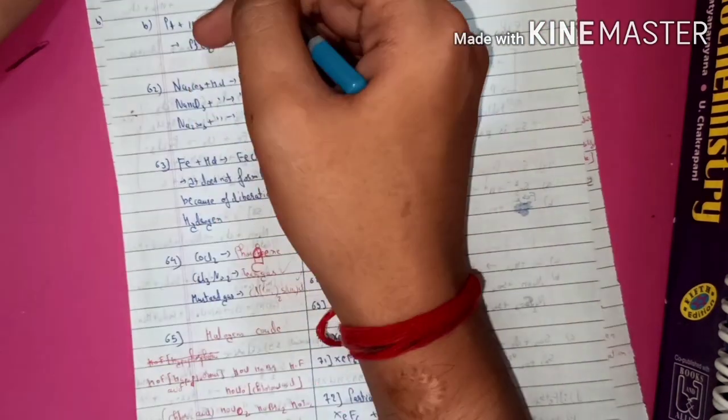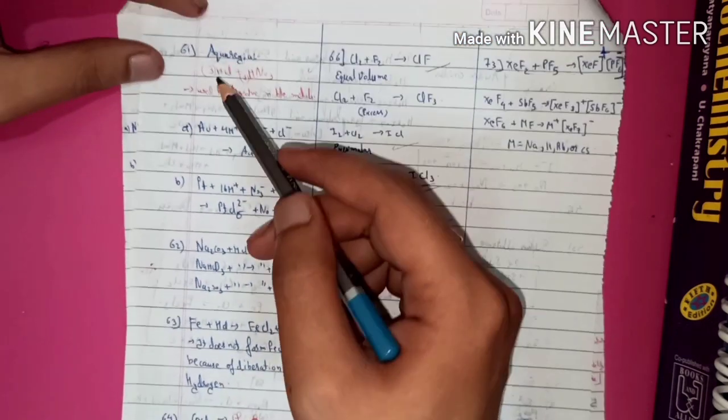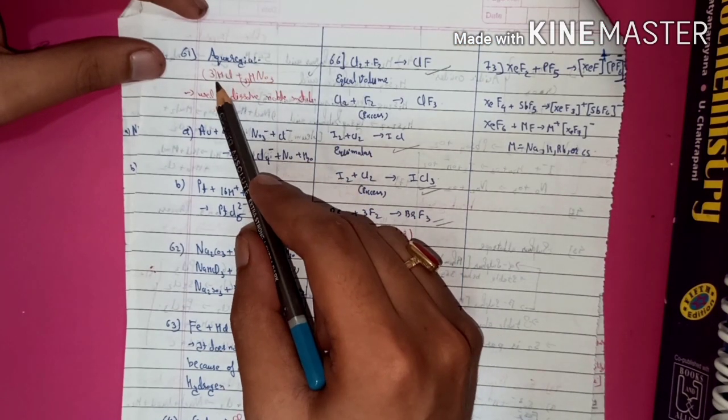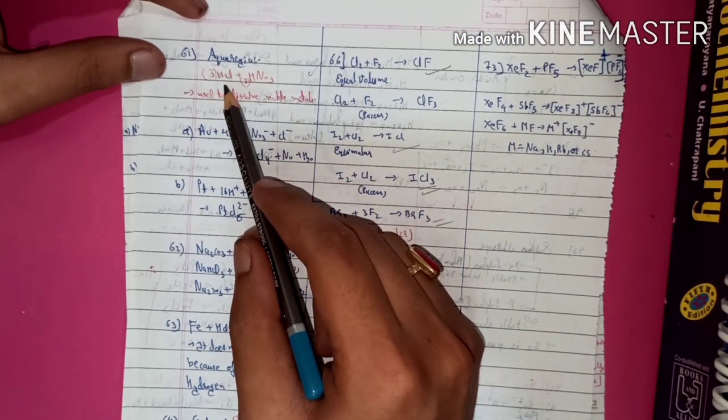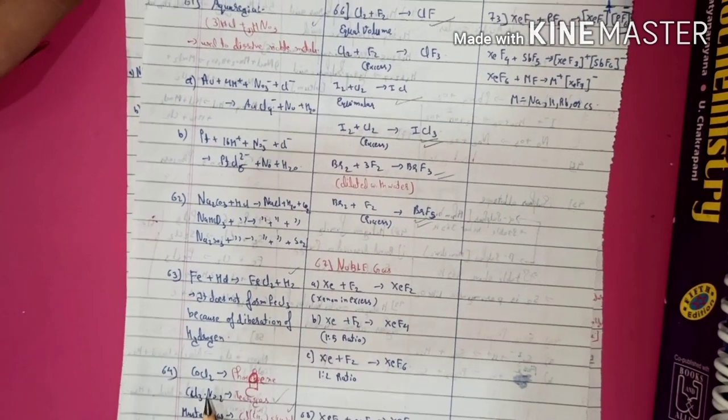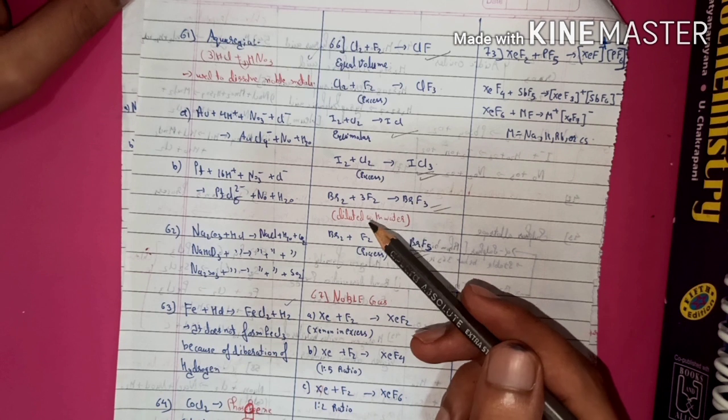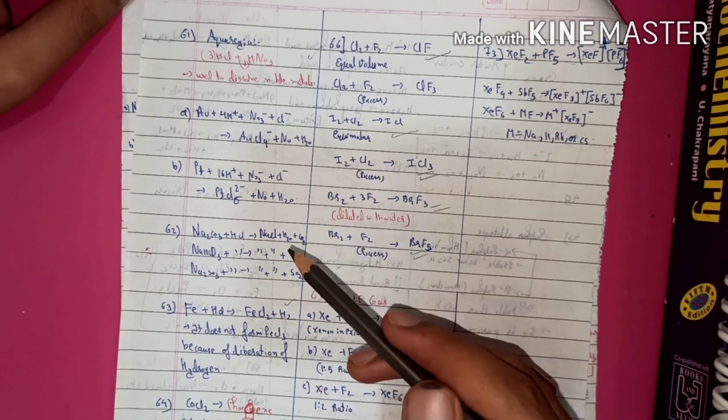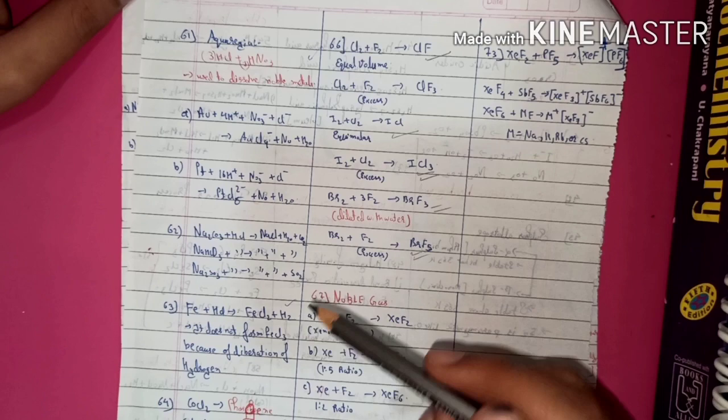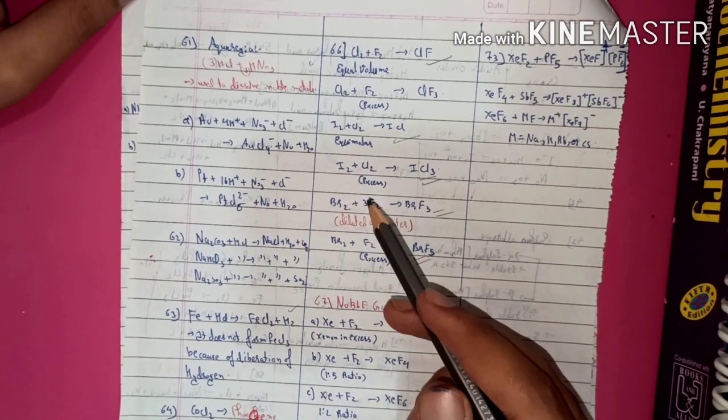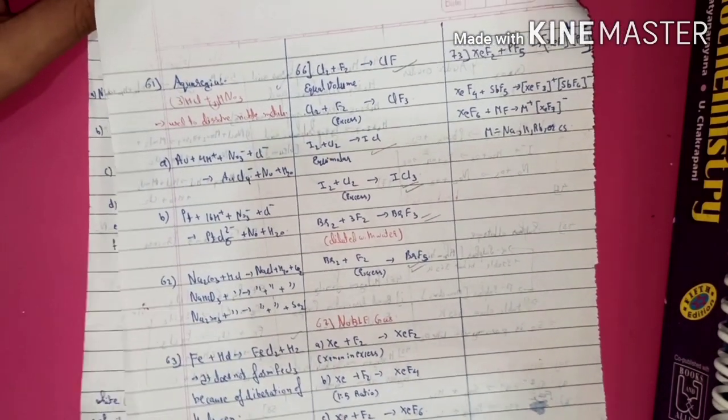So, in this way, you can also remember the aqua regia composition 3 is to 1 of HCl and HNO3 which are important and these are the direct questions which will be asked in the NEET examination. If you remember this, you will save your time and get extra time to attempt the physics which is quite lengthy.